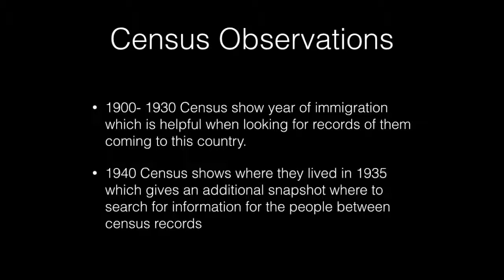The 1900–1930 Census records show the year of immigration, which is helpful when looking for records of when individuals came to this country. The 1940 Census shows where they lived in 1935, which gives an additional snapshot of where to search for information for people between the census records.